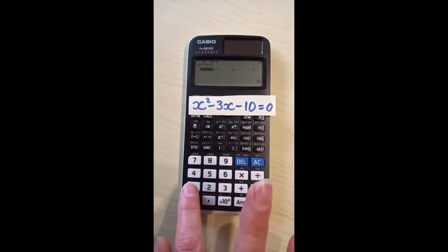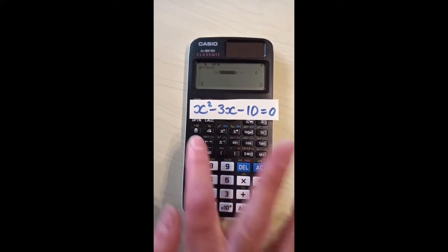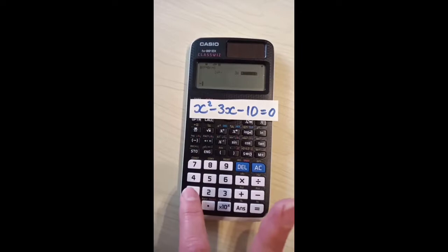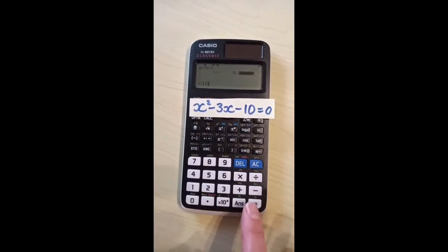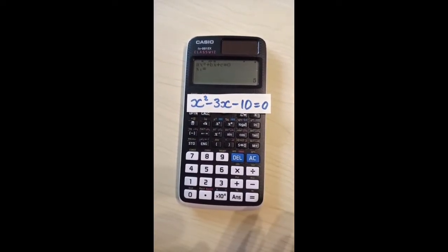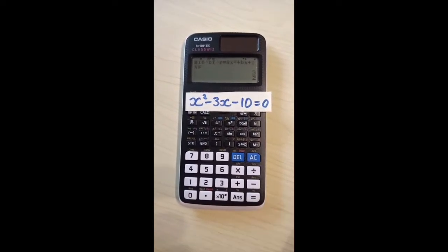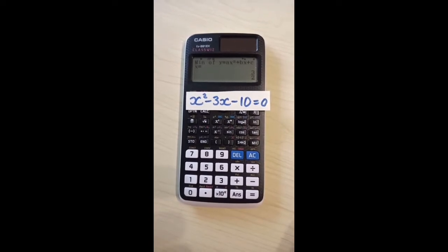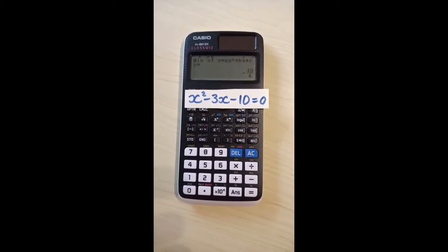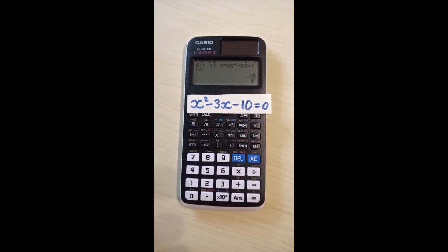A is 1, so type 1 equals. B is negative 3, type negative 3 equals. C is negative 10, type negative 10 equals. Now press equals to be told the first solution, equals again for the second solution, equals again for the x-coordinate of the turning point, and equals again to be told the y-coordinate of the turning point. And that's it.